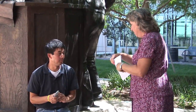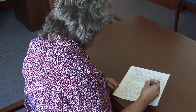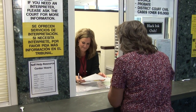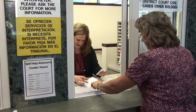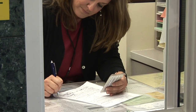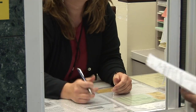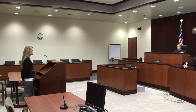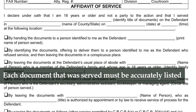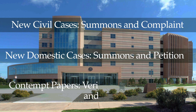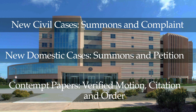Lastly, after service is performed by your chosen process server, you need to make sure they fill out a form called a return of service or affidavit of service. This form must be signed in front of a notary unless the process server is a peace officer. The affidavit must clearly state who performed the service so that, if necessary, they can come to court and provide explanation in case there are any questions. Be sure the documents served are accurately listed by document name on your affidavit of service — for instance, the summons and complaint, or summons and petition for a new case, or if you were serving contempt papers, that verified motion, citation, and order.